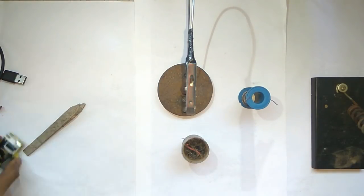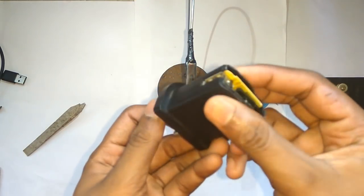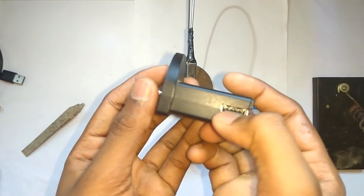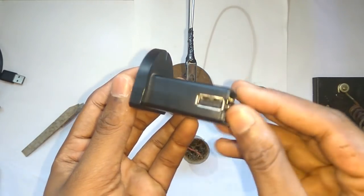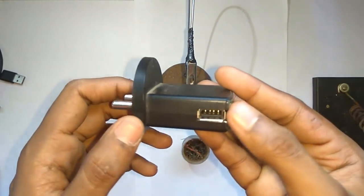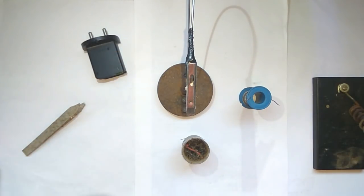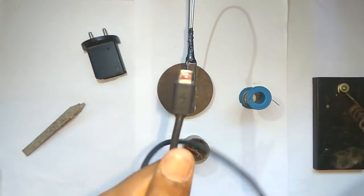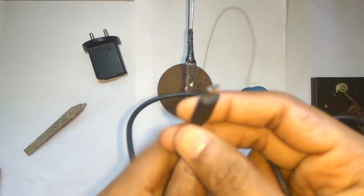To make OTG we need an old charger of any phone like this. If it is broken there is no problem because we only need the USB female part which is present over here. It doesn't matter if it is broken or it is nice. And the next part we need is the USB cable. From the USB cable we will only need this mini USB.